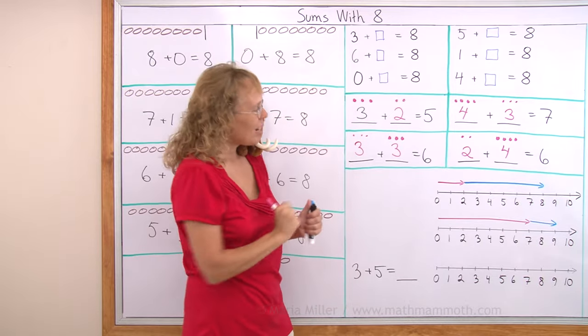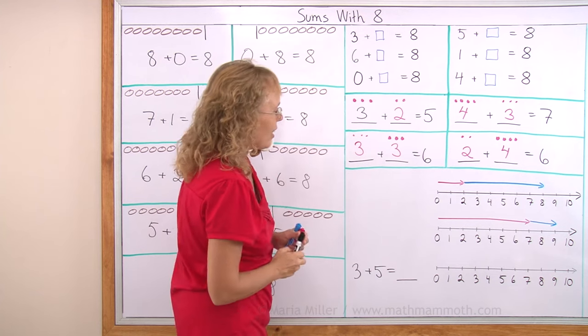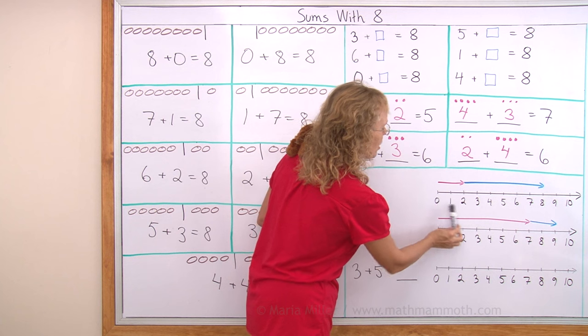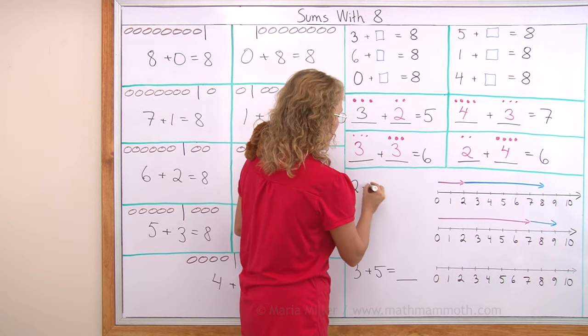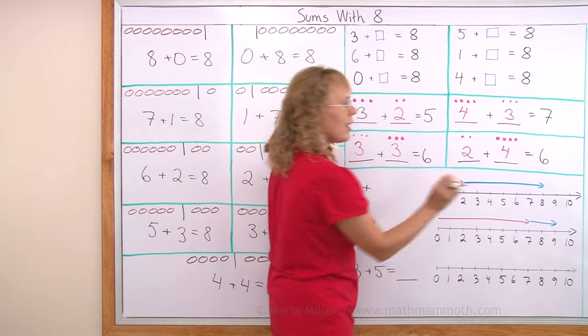Lastly, we're going to practice number line addition just a little bit. It's a number line. And we have here an arrow and another arrow. The first arrow goes from 0 to 2. That means 2. And then I add some more. And wherever I end up, see it ends here at 8.